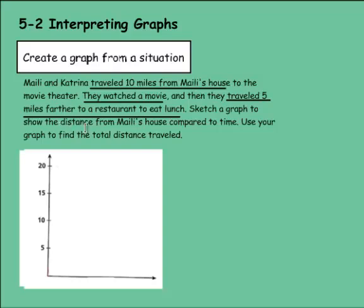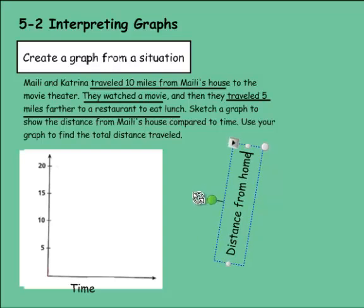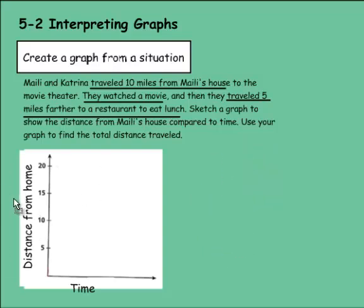So it tells us to compare distance from Maley's house compared to time. And I know that time is going to affect the distance to Maley's house. I'm going to make time my independent variable. And I'm going to make distance, we're going to call it distance from home, as the dependent variable. And you see I already have numbers here. Sometimes you have to create those numbers. It doesn't really give us time, so we're going to kind of just make estimates here with the time. But we do know distance numbers, so that will help.